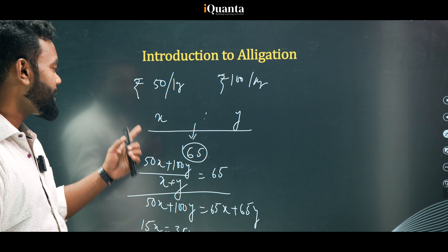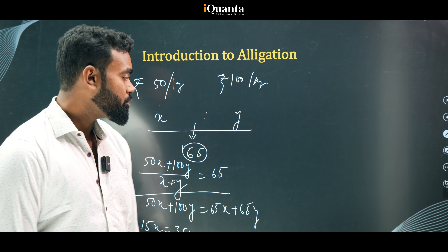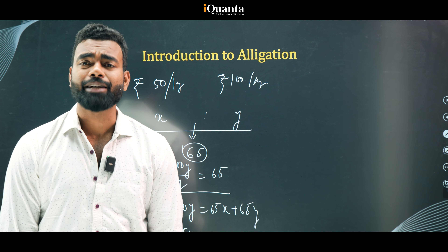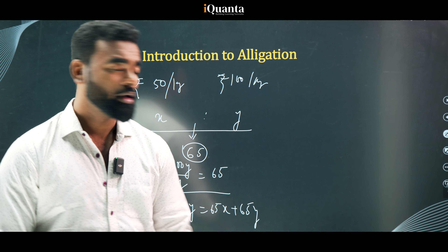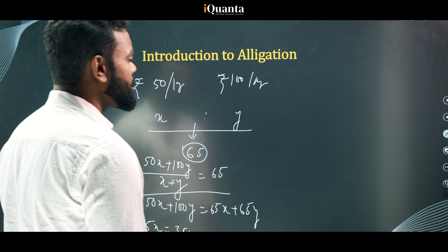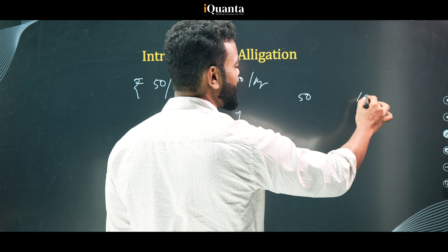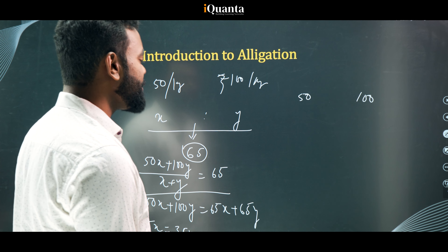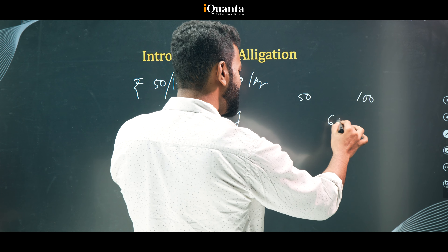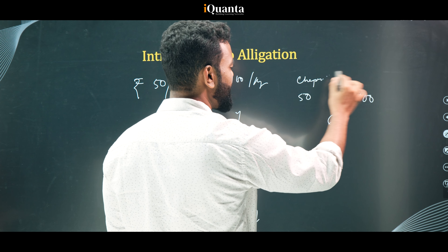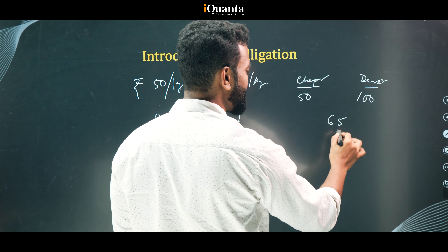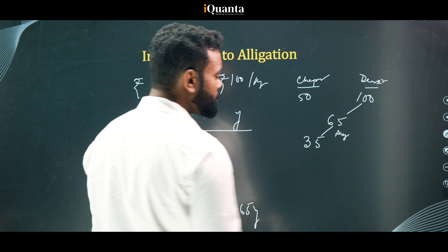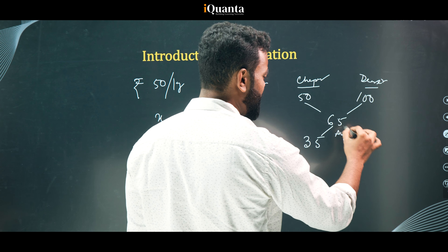With ratio 7:3 you can find the ratio but not the exact quantity — only the ratio. Now the second, faster method is the method of allegation. Write the cheaper price (50) on the left and the dearer price (100) on the right, with average (65) in the middle. Subtract average from dearer: 100 - 65 = 35. Subtract cheaper from average: 65 - 50 = 15. Ratio = 35:15 = 7:3. Same answer!